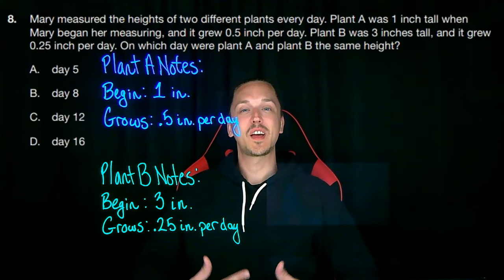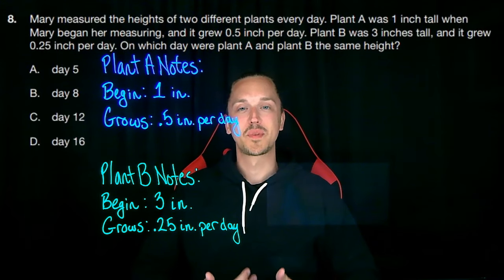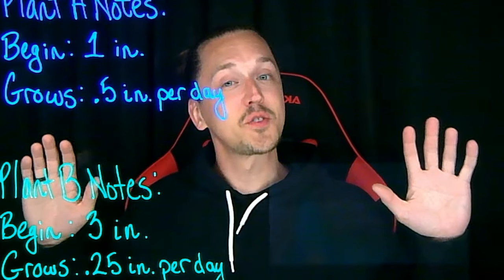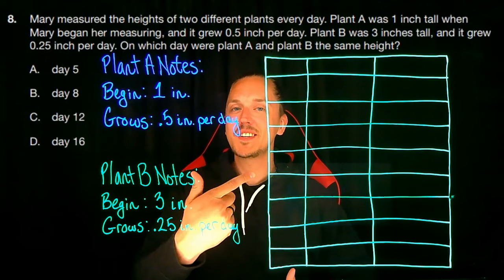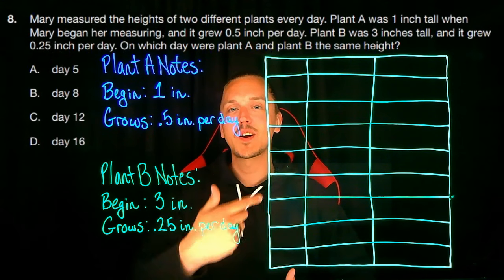For today, I say we create a table of values for tracking the growth of the plants. Hey, it may not be the fastest or the most difficult method that we could choose, but it'll work. We'll track the days and the height of each plant in the columns.